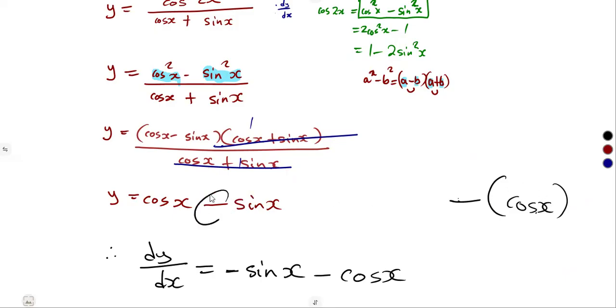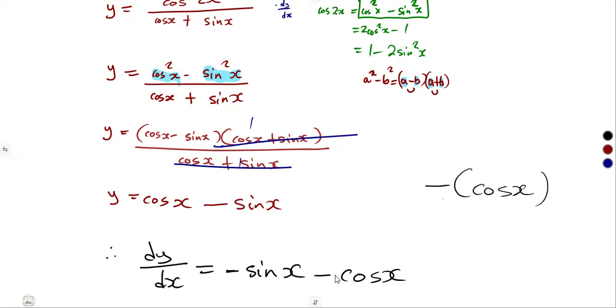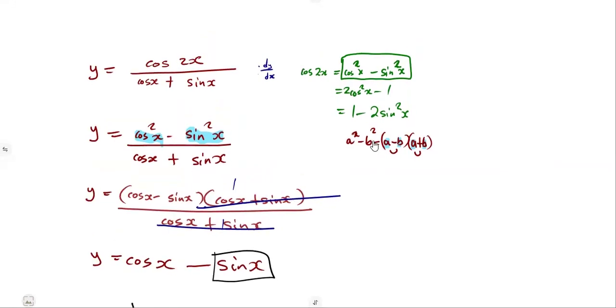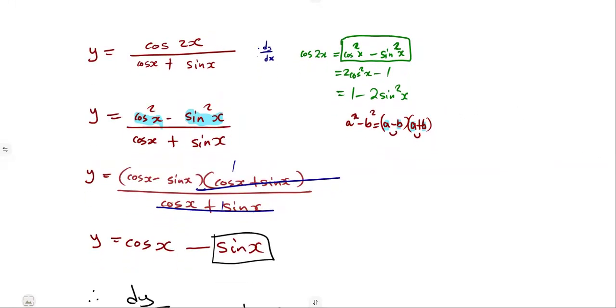The negative sign from the question affects the final answer. This illustrates the idea — exams don't always give you the standard form directly. You have to figure out what can be done: apply identities, factorization, or any simplification technique so it becomes a standard form you can differentiate.